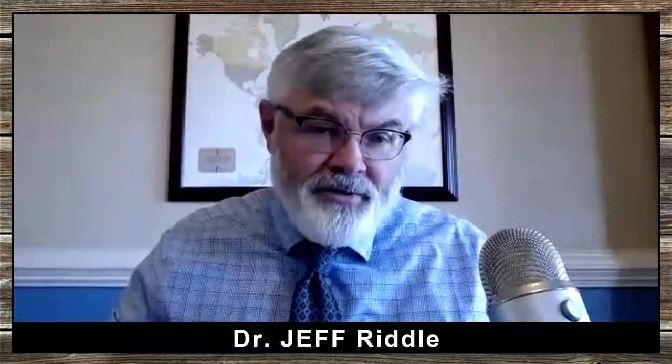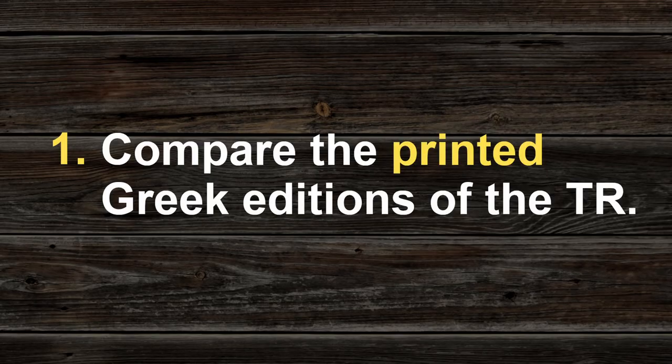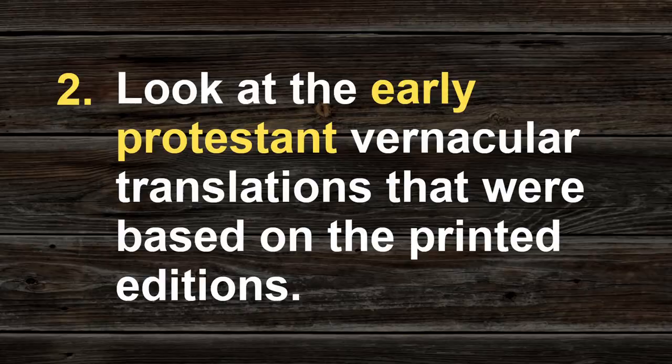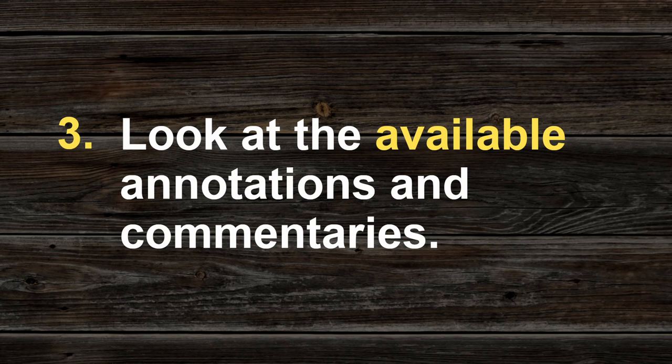So what do you do when you come to a place where there are two readings in the TR tradition? First of all, you compare the printed Greek editions of the TR — compare and consult them and identify what the problem, issue, or difference is. Secondly, look at the early Protestant vernacular translations that were based on the printed editions. And then thirdly, if available, look at the annotations by the editors of those printed editions.